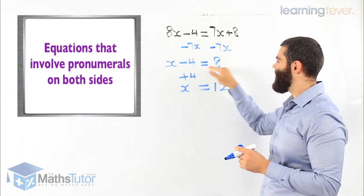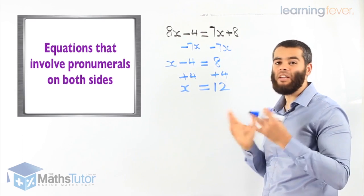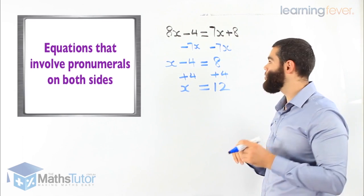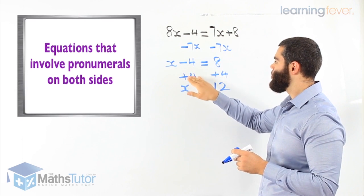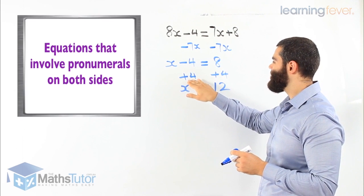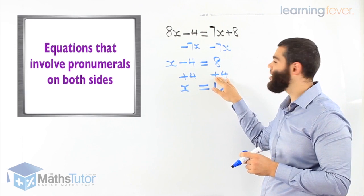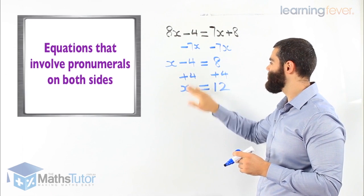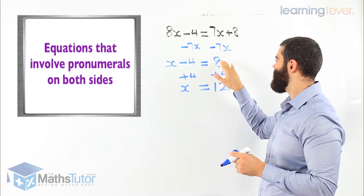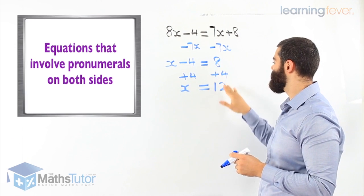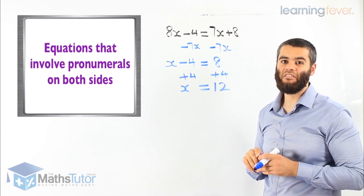We have a simple equation: x minus 4 equals 8, meaning something take away 4 equals 8. We basically add 4 on one side and add 4 on the other — minus 4 plus 4, we're left with x. And 8 plus 4 is 12, so x is 12. It's that easy. Let's do some more.